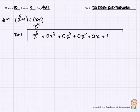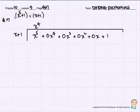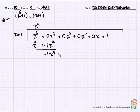x to the 4th times 1 is plus 1x to the 4th. And as we do in normal division, we subtract. x to the 5th take away x to the 5th is 0. 0x to the 4th take away 1x to the 4th is negative 1x to the 4th.